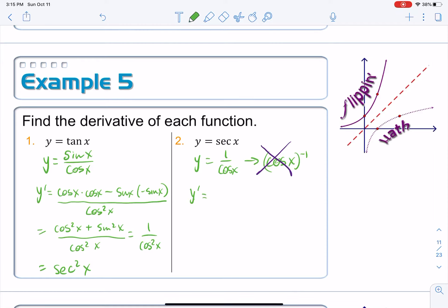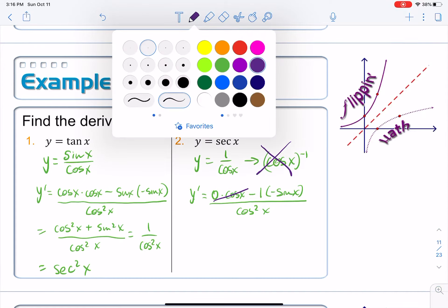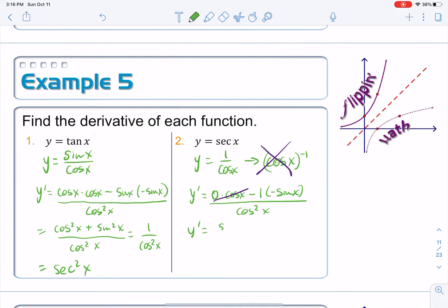So y prime is equal to the derivative of the top is zero, the derivative of a constant is zero, times the bottom cosine x, minus the top one times the derivative of the bottom, derivative of the bottom is negative sine x, all of this over the denominator squared, cosine squared x. Cancellation - that is gone. Negative one times negative sine is positive sine. So sine x on top over cosine squared x.